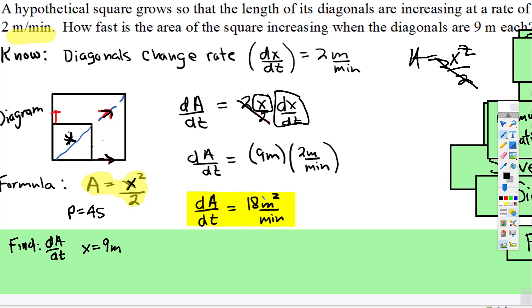And then we simplify. So 9 times 2 is 18, meters times meters is meters squared over minutes. So this is how fast the area is increasing as the diameter is increasing. That's it for this one.